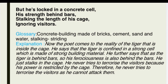Stanza 4: 'But he is locked in a concrete cell / His strength behind bars / Stalking the length of his cage / Ignoring visitors.' Concrete means building material made of bricks, cement, sand, and water; stalking means striding. The poet describes the reality of the tiger inside the cage — confined in a strong cell, his ferociousness is also behind the bars. He just stalks in the cage and never tries to terrorize visitors because his power is restricted by the cage.